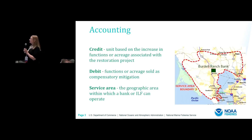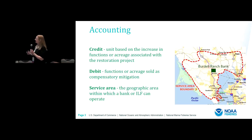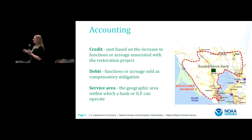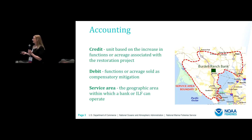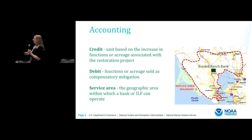There are some terms used for accounting. A credit is a unit based on the increase in functions or acreage associated with a restoration project — you do some kind of project and it creates ecological credits. These pertain to banks and in-lieu fees primarily. A debit is the other side of that: if a bank has accrued credits through their restoration action, they can trade or sell those credits and they are debited from the bank. Finally, there's a service area, which is the geographic area within which a bank or in-lieu fee program can operate.